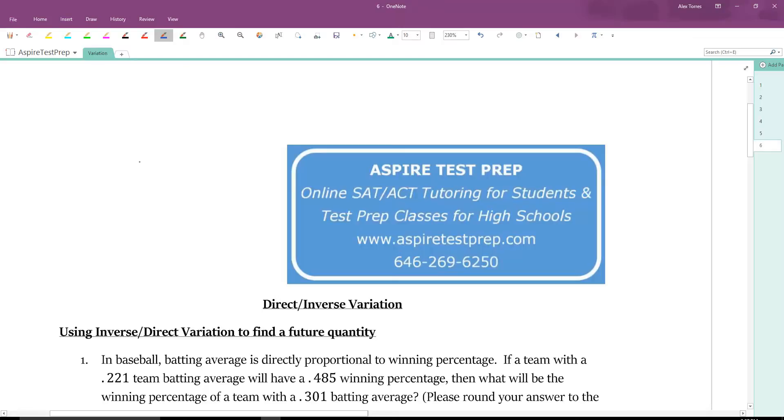Starting with number one, we have a baseball team where batting average is directly proportional to winning percentage. The important thing to start out is when we see a phrase like directly proportional, inversely proportional, or when something directly varies or inversely varies with something else, those are code words for certain equations that we have to write.